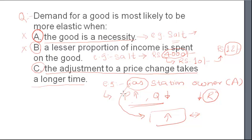So option C is saying the adjustment to a price change takes a longer time. The demand for a good is more elastic when, for that particular product, it will take some time to change the prices. So option C is the right one.